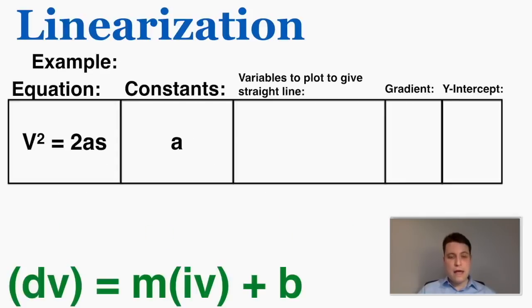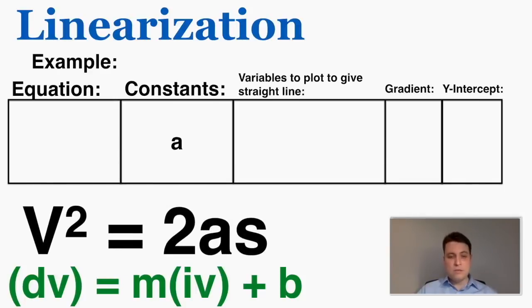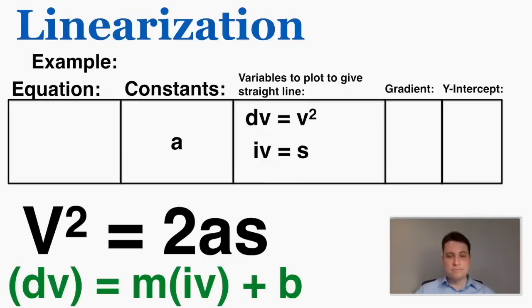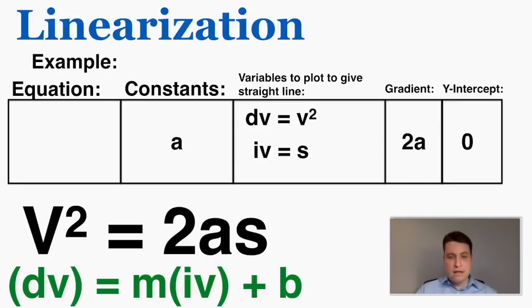Let's take the equation v squared equals 2as and linearize it, assuming that a is a constant. That means my two variables are v and s. I can see that v squared is taking the place of dv, so I'm going to say dv is equal to v squared — that's what I put on the dependent variable axis. And s is the only variable taking the place of the independent variable, because 2 and a are both constants. So iv is just equal to s. The slope is going to be whatever constant is multiplied by that independent variable, which here is 2 times a. And there's nothing being added, so the y-intercept is just 0. If you graph v squared on the y-axis and s on the x-axis, you will definitely end up with a slope of 2a and a y-intercept of 0.